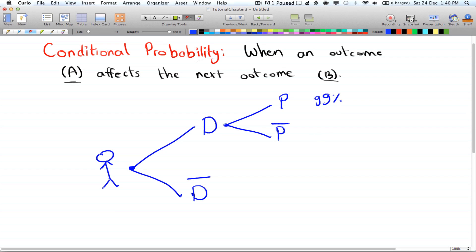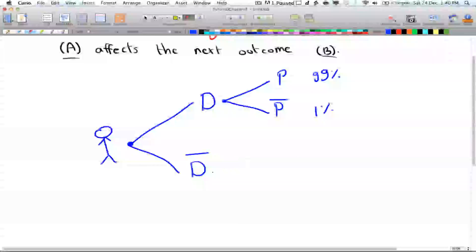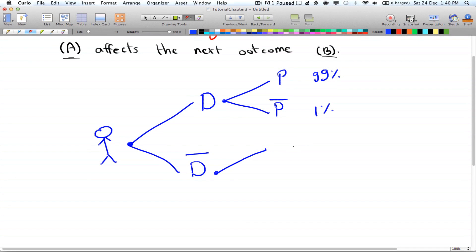And there's always a 1% chance that the test will fail. Or if he doesn't have the disease, then let's say there is a 4% chance that the test will come out positive. And that leaves 96% of the test coming out negative, which is right.